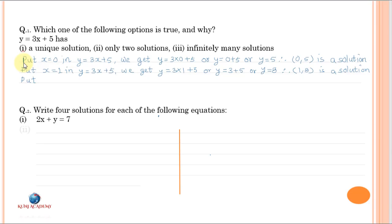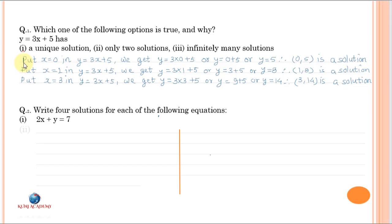Put x equal to 3. We can put any value: 3, 4, 5, 6, 7, and so on. Therefore (3, 14) is a solution. Thus we can find an infinite number of solutions. Therefore answer is 3 — answer 3 is true.